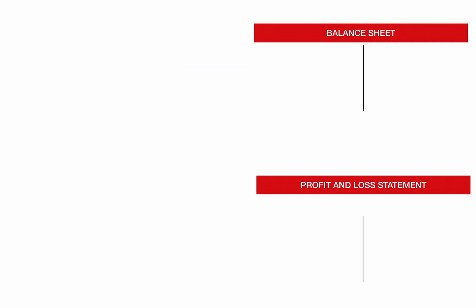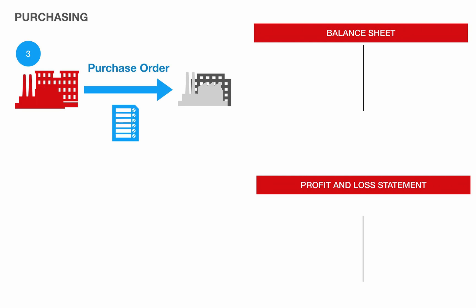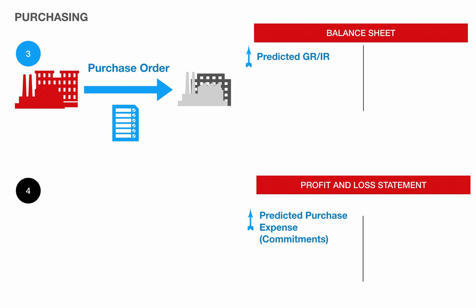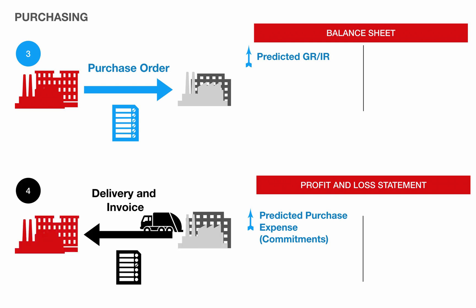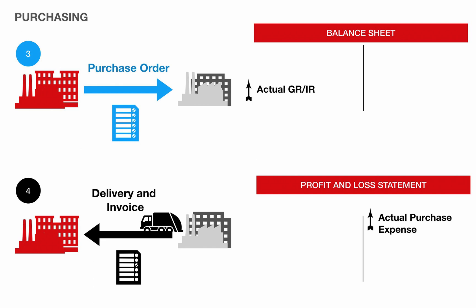On the purchasing side, a purchase order or a purchase requisition is a basis for a prediction of future purchase expenses, and a goods receipt and invoice receipt. With a goods receipt, the actual purchase expenses and GRIR are posted in the system.